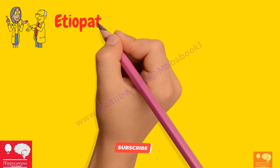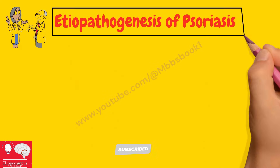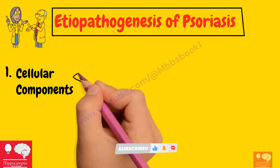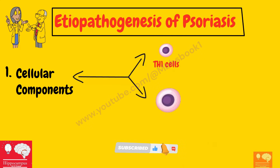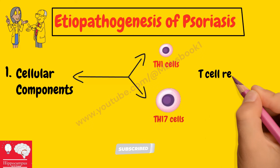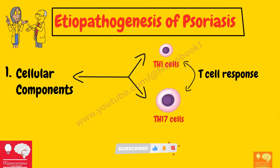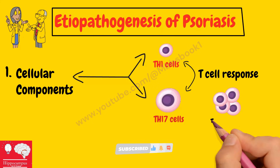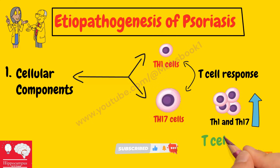Moving on to the etiopathogenesis of psoriasis. In the etiopathogenesis of psoriasis, number one, we have cellular components. In these cellular components, we have Th1 cells and Th17 cells. What happens in psoriasis is Th1 and Th17 increase. So this is a T-cell disease.